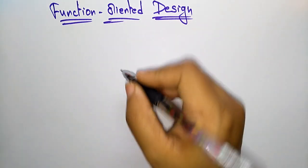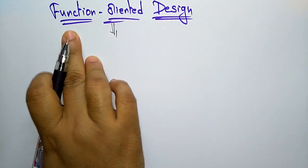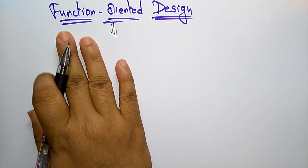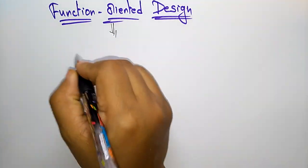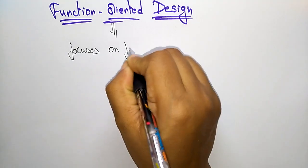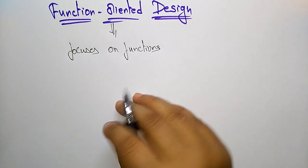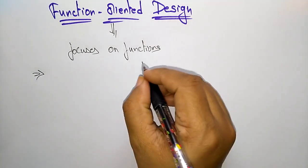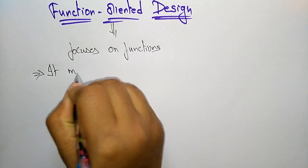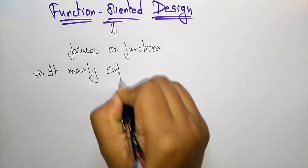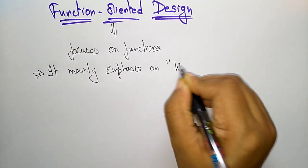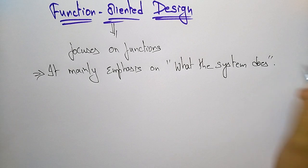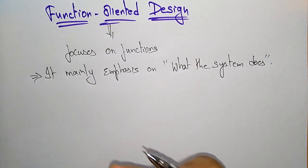Now let us see what is function oriented design. The main thing is that function oriented design is mainly focused on the function — the designing process is focusing on the functions. These functions are divided into sub functions, and those sub functions are further divided. It mainly emphasizes on what the system does.